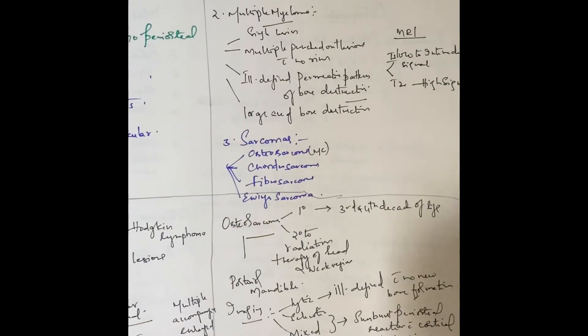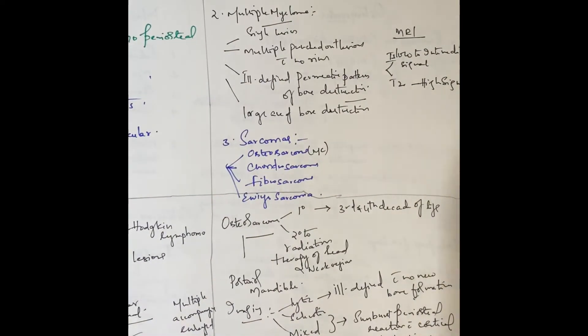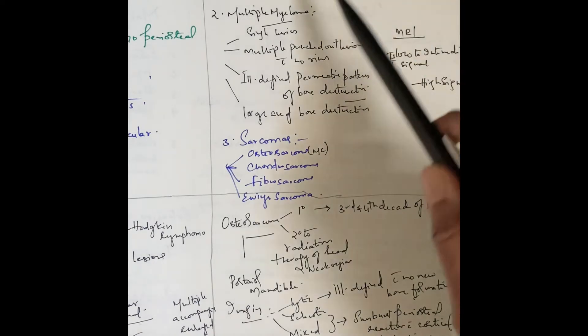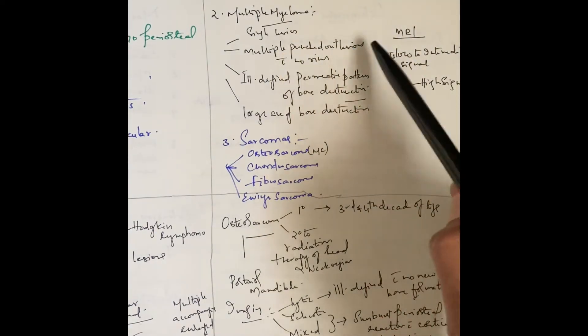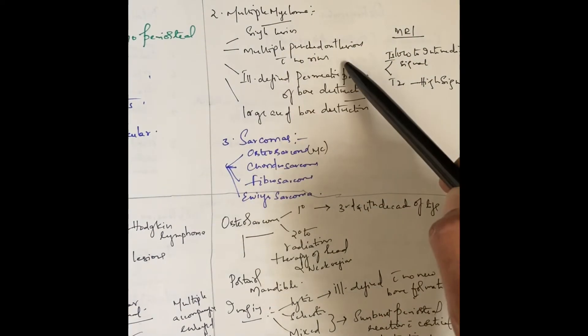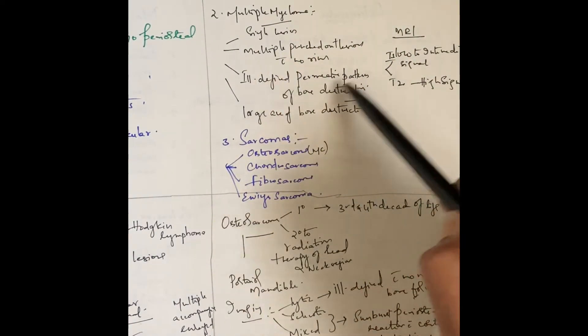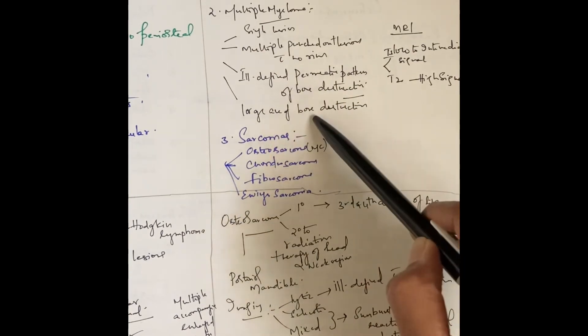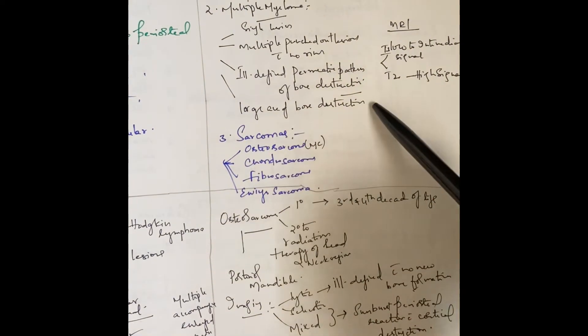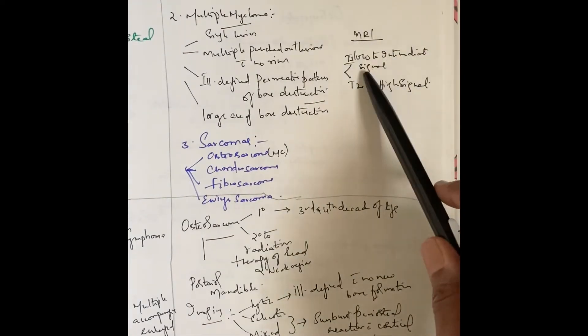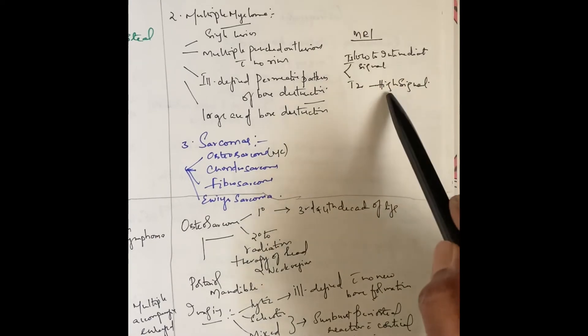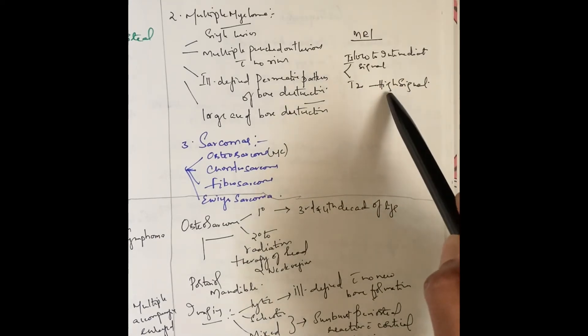Multiple myeloma can present as a single lesion or multiple punched-out lesions with no rim, or as an ill-defined permeative pattern of bone destruction, or a large area of bone destruction. On T1 there will be low to intermediate signal, and T2 will be high signal.